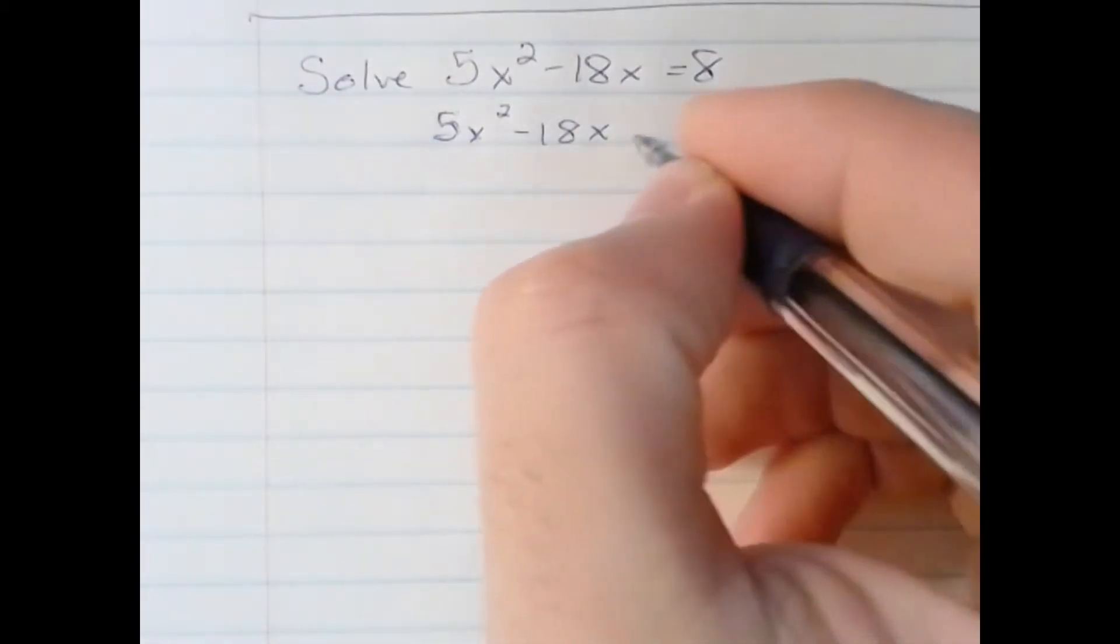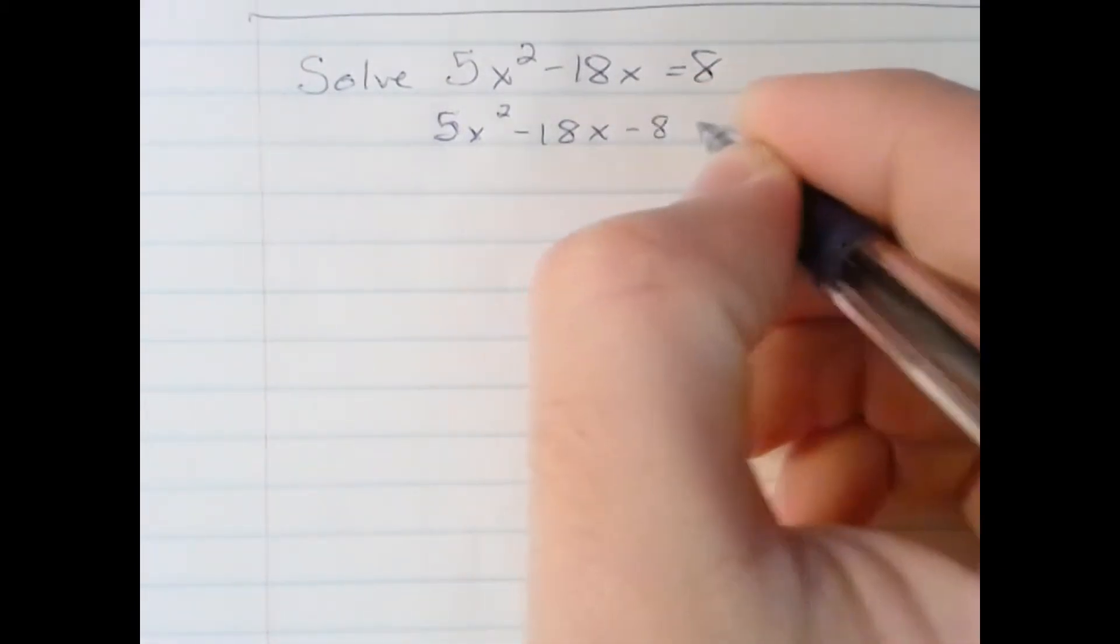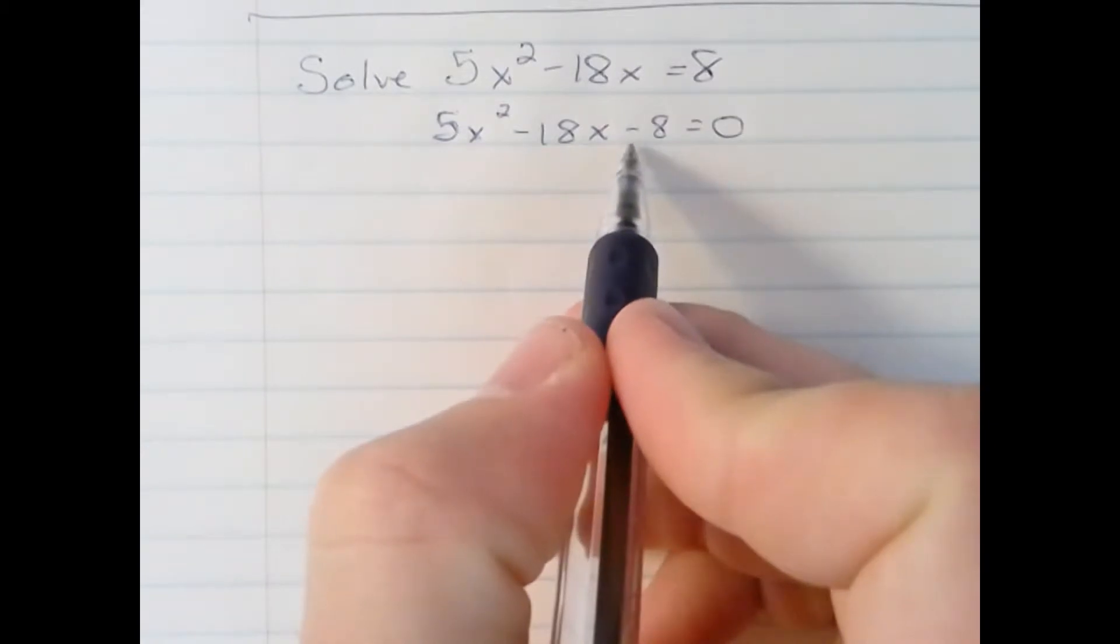5x squared minus 18x. I'm subtracting 8 from both sides. That shows up as a minus 8 on this side.